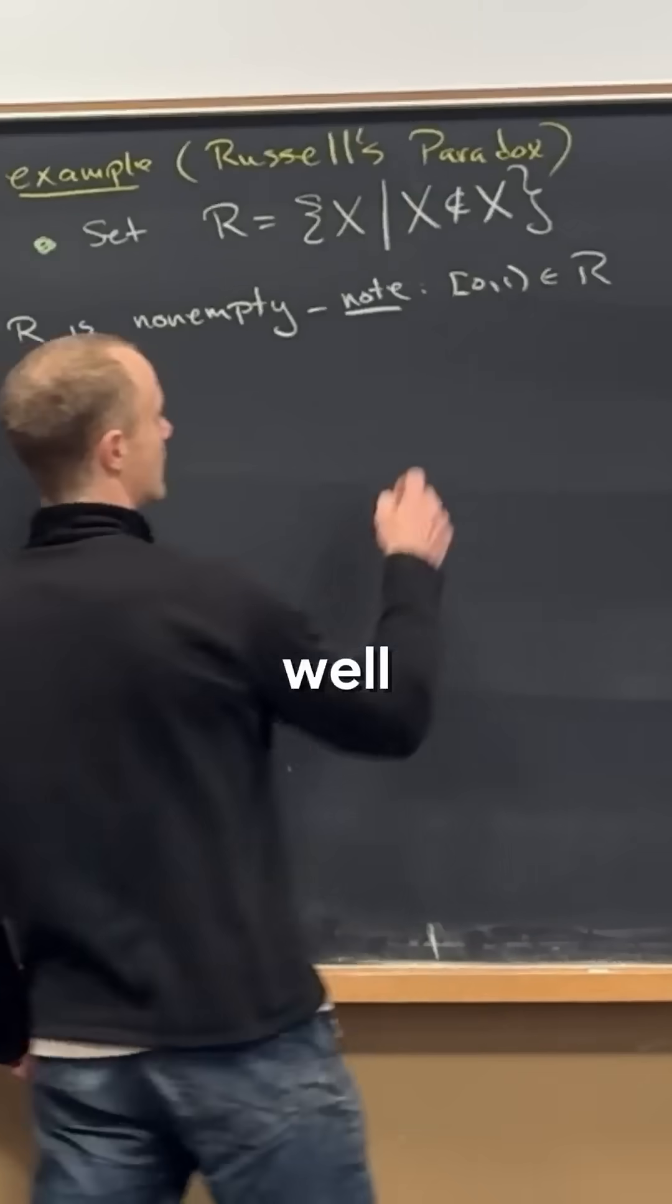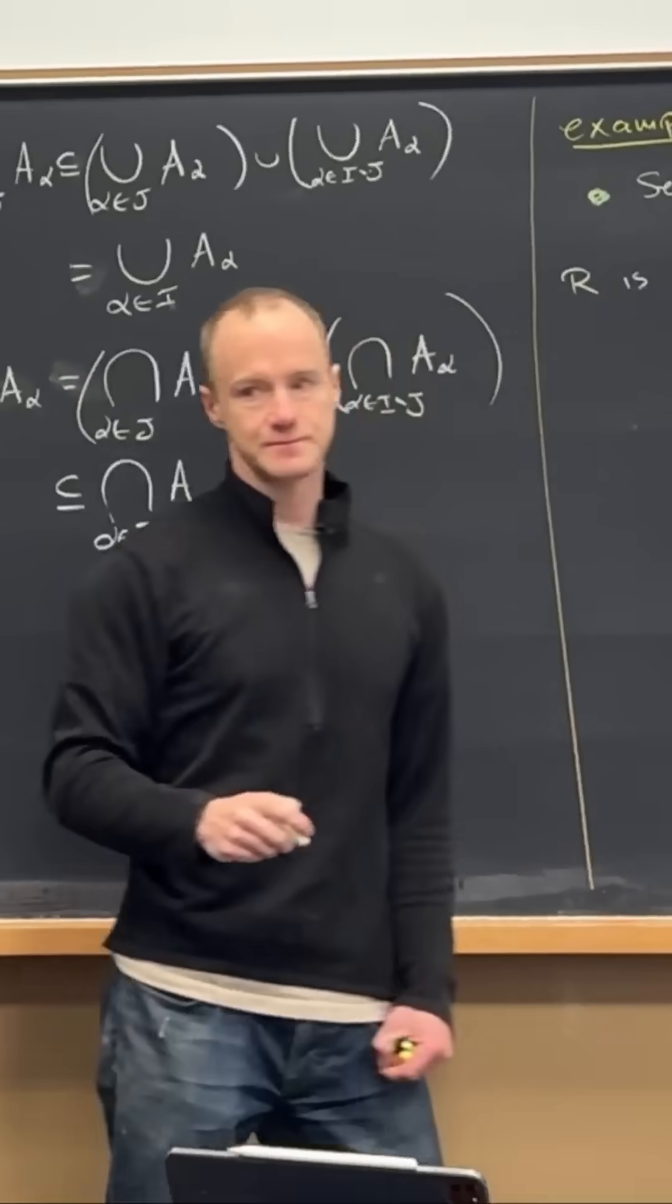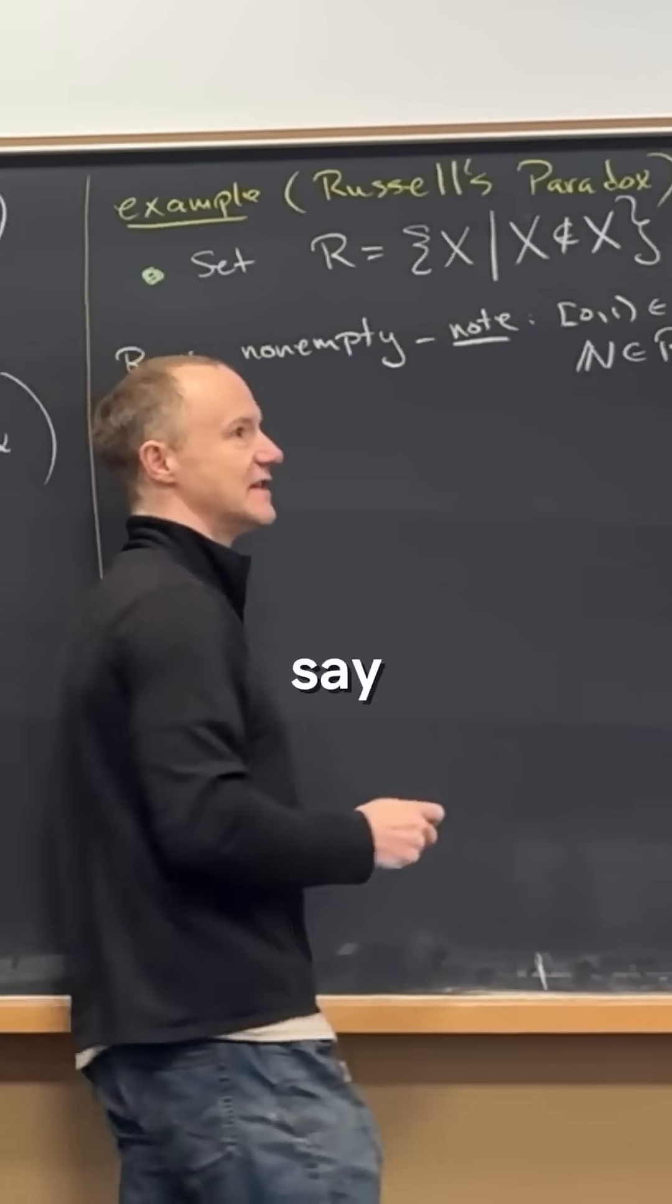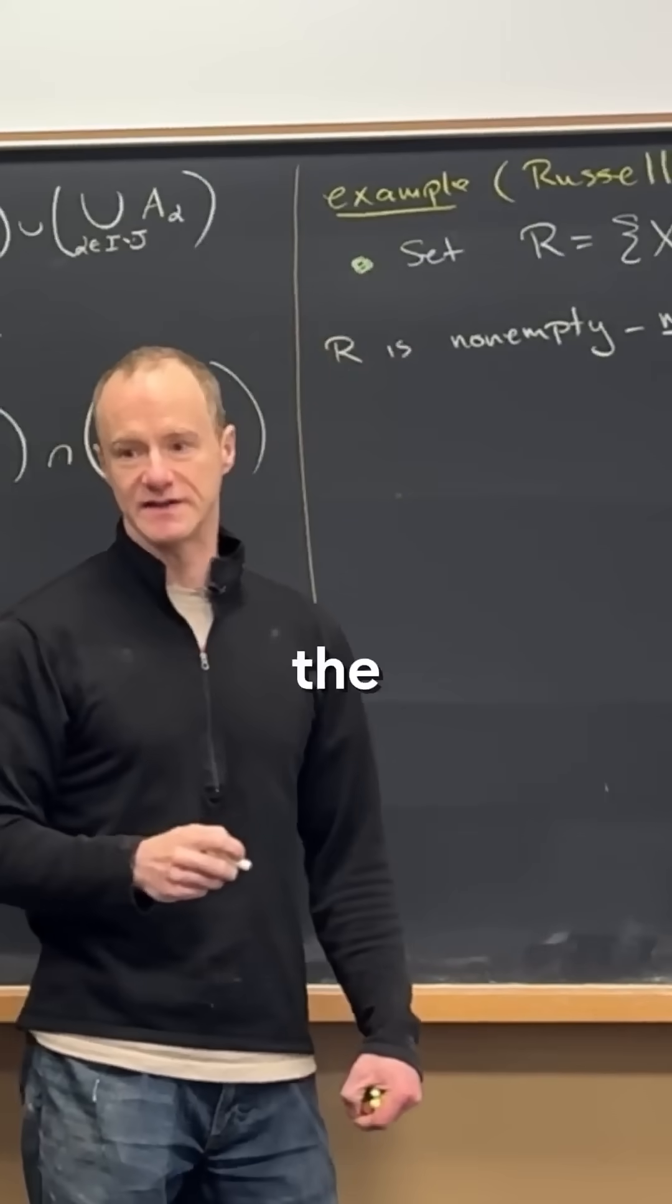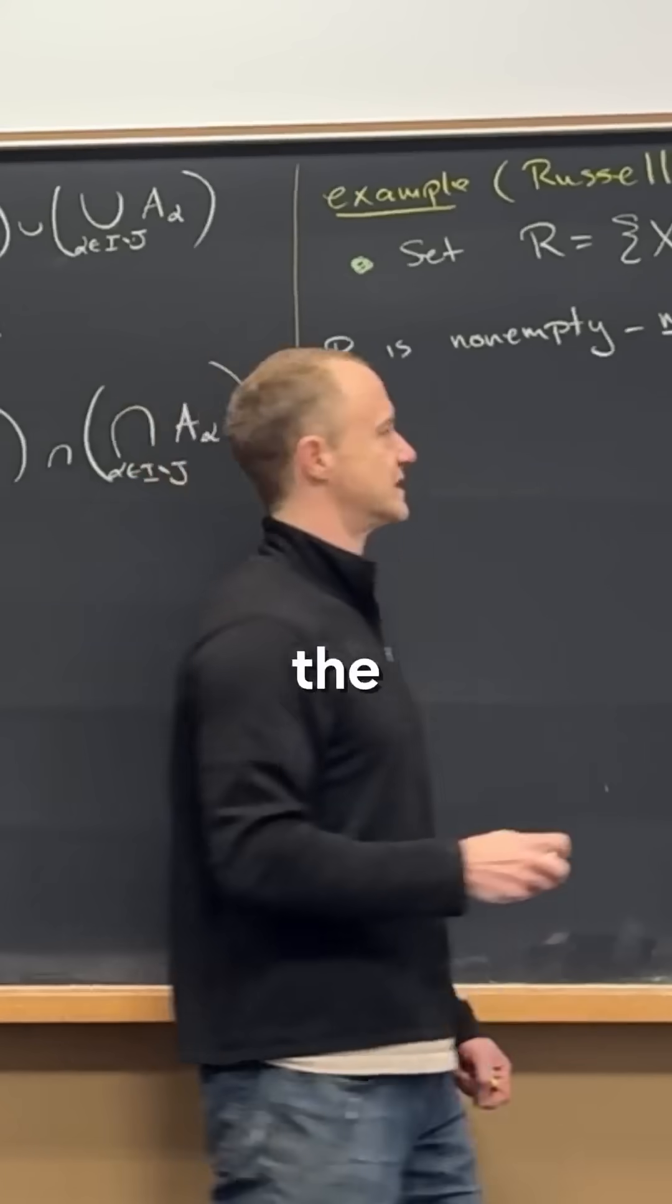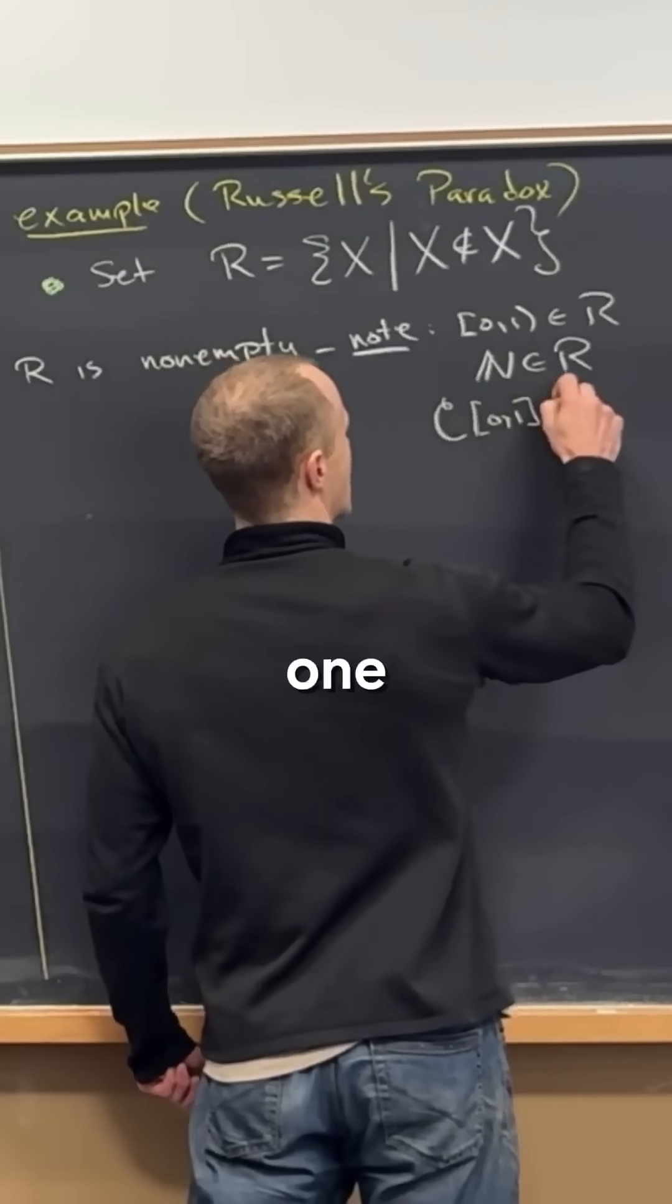Then essentially all number sets are gonna be inside of R. So the natural numbers, and then here I'll say this one in words, but then I'll just write the symbol for it. So this fancy C, zero, one.